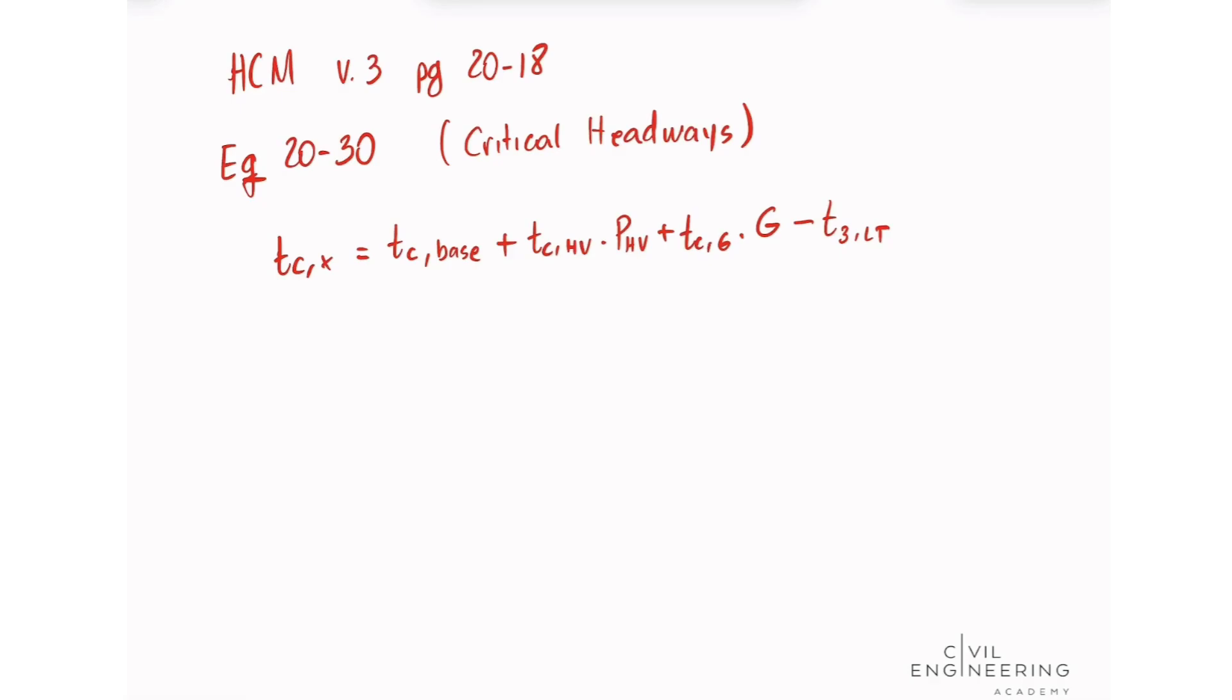Let's see what we have. For our TC base, our base critical headway, we're going to be looking on exhibit 20-12. We see on exhibit 20-12 that for a right turn from a minor street and four lanes, we have our TC base at 6.9.